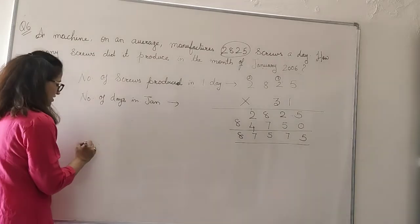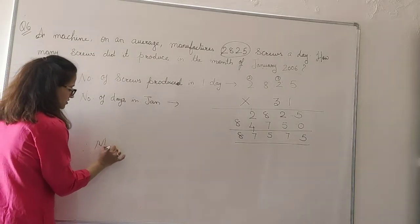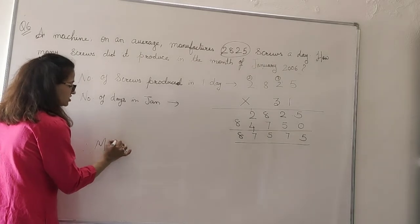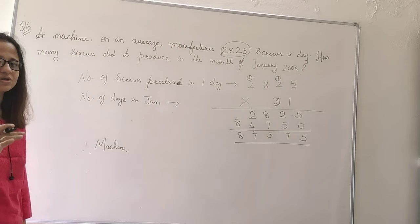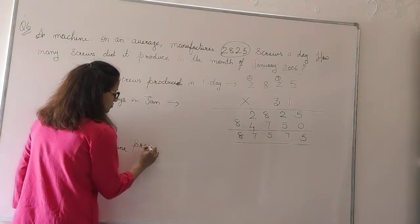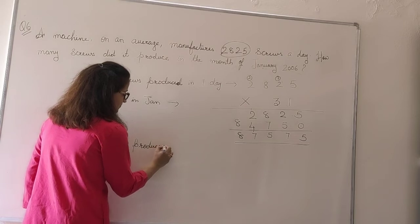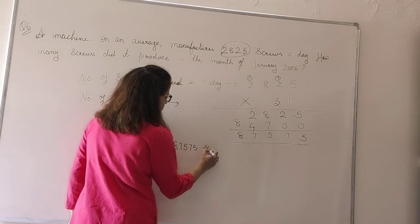So what will be the concluding statement? Therefore, machine produced - this is very important to write. The last statement is compulsory to be written for a problem sum. Therefore, machine produced 87,575 screws.